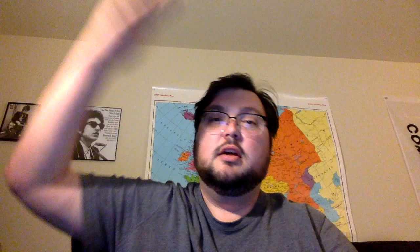Feudalism is an economic and political system based on land ownership in exchange for military service. It included a lot of different rights and obligations between the different individuals taking part in the system. A feudal society is going to be structured like a pyramid. At the top you've got the king, then you've got all of his nobles, below them you've got the knights, and then down at the bottom you've got everybody else.